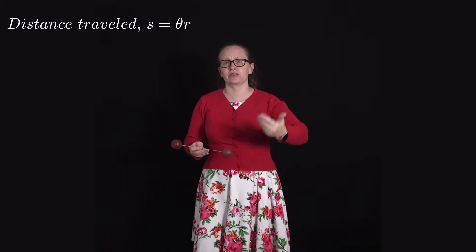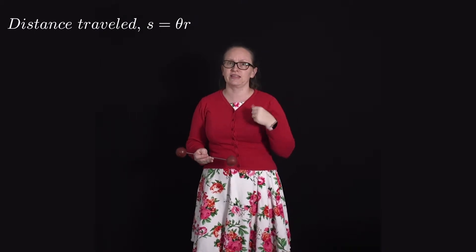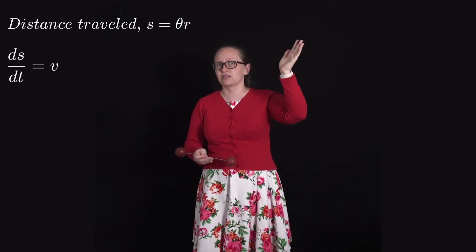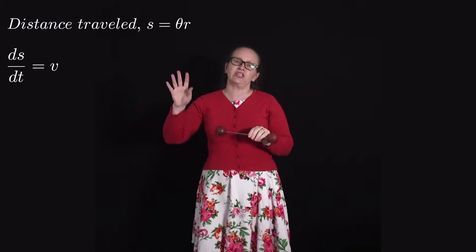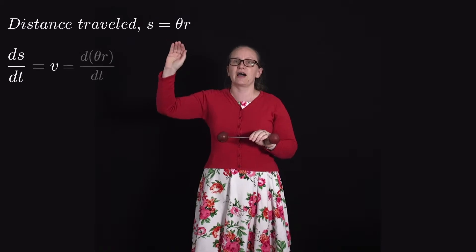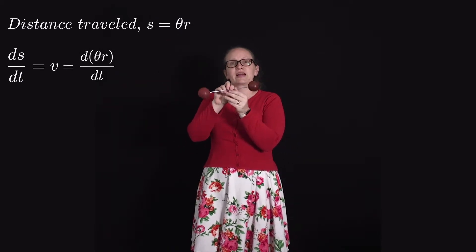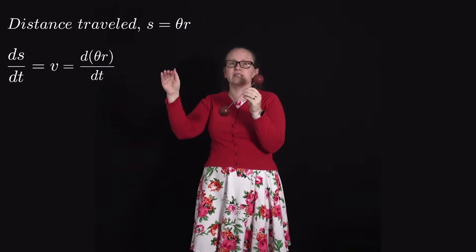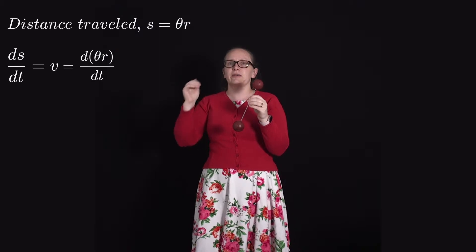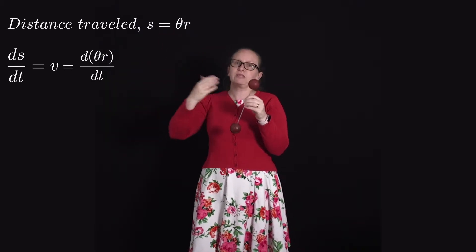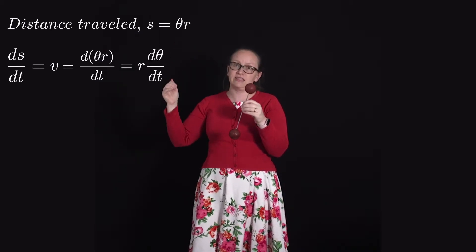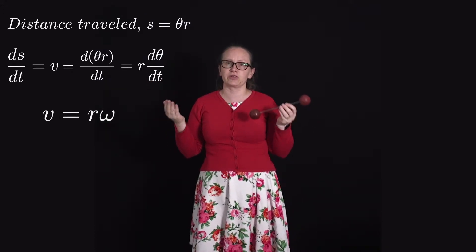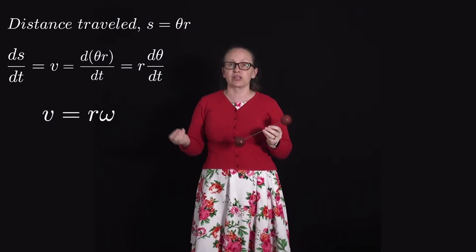To relate the velocity to the angular velocity, we can just differentiate this equation. Differentiating the distance s with respect to time gives us the speed: ds/dt = v. On the right-hand side, the radius r is constant for circular motion, so dr/dt = 0. Therefore the derivative of θr with respect to time is r·dθ/dt, and since dθ/dt = ω, this gives us v = rω, which we saw when looking at circular motion previously.